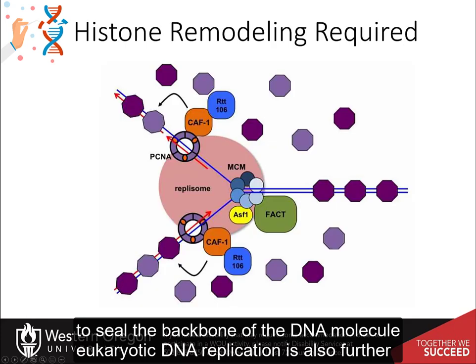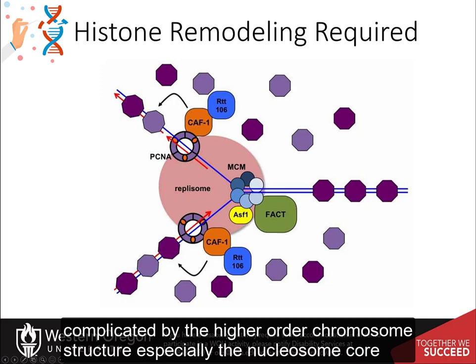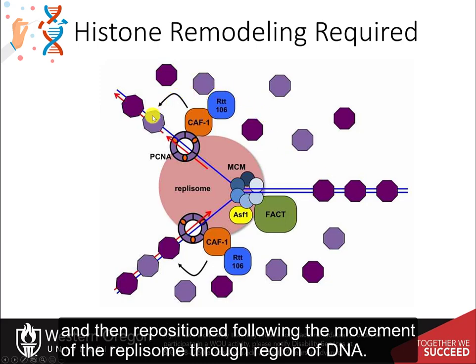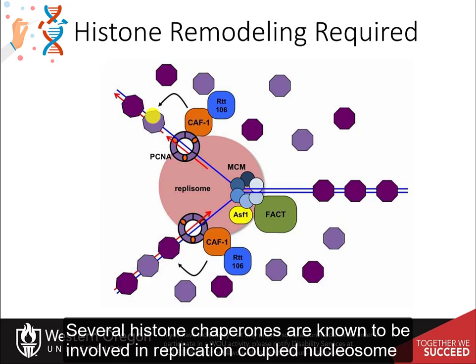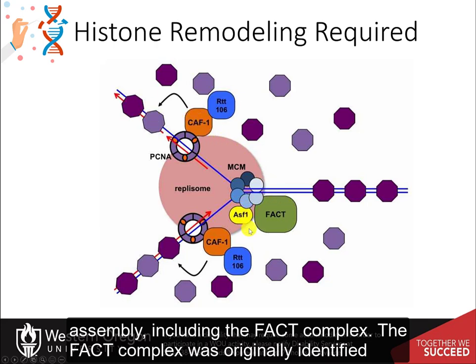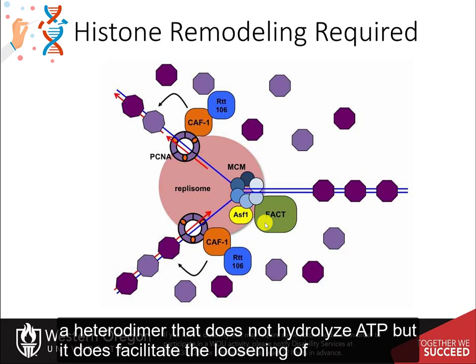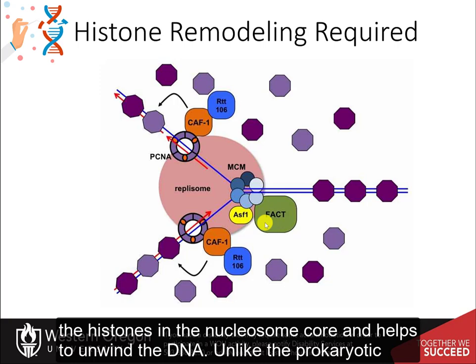Eukaryotic DNA replication is further complicated by higher order chromosome structure, especially the nucleosome core structures. Nucleosomes, shown in purple, must be displaced and then repositioned following the movement of the replisome through a region of DNA. Several histone chaperones are known to be involved in replication-coupled nucleosome assembly, including the FACT complex. The FACT complex was originally identified as proteins that greatly stimulate transcription by RNA polymerase II. It is a heterodimer that does not hydrolyze ATP, but it does facilitate the loosening of the histones in the nucleosome core and helps to unwind the DNA.